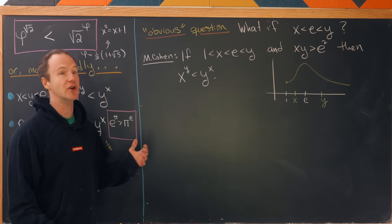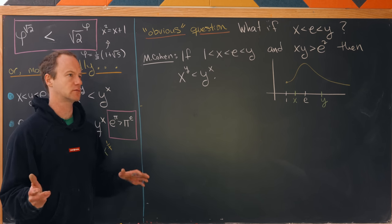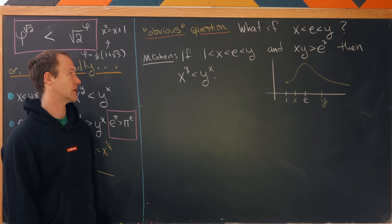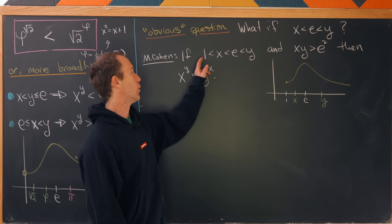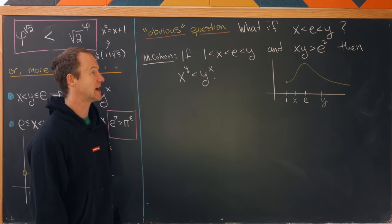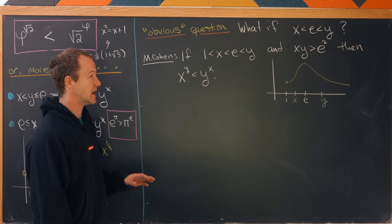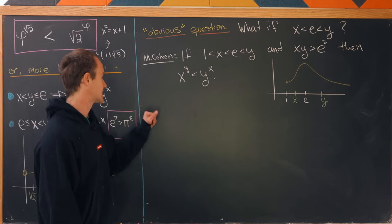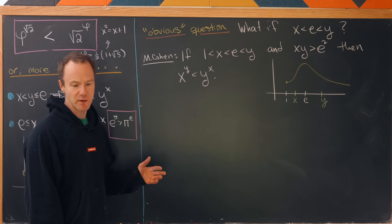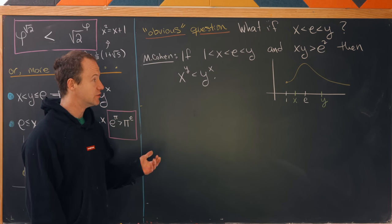go ahead and do so. What it says is that if 1 is less than x is less than e is less than y, and x times y is bigger than e squared, then x to the y is less than y to the x.